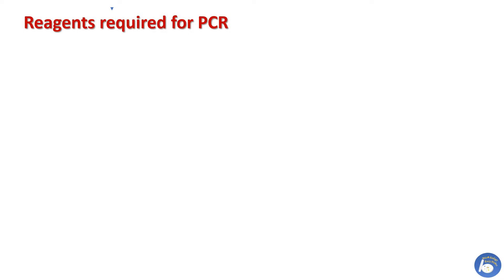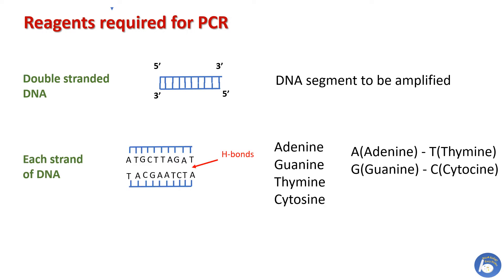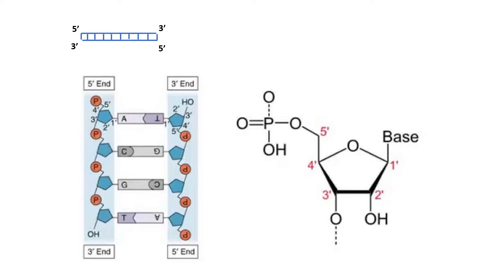Now what are the reagents required for PCR? First is double-stranded DNA. This is the DNA segment which needs to be amplified. The two strands of double-stranded DNA are held together by hydrogen bonds between bases on adjacent strands. Adenine, guanine, thymine, and cytosine are the bases. Adenine always pairs with thymine while guanine always pairs with cytosine. Each end of a DNA molecule has a number. One end is referred to as five prime and the other end is referred to as three prime.